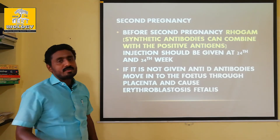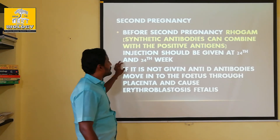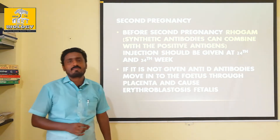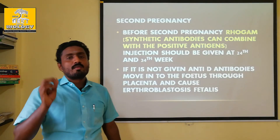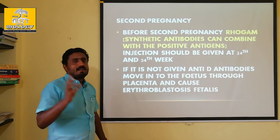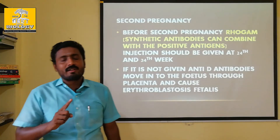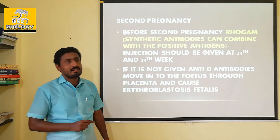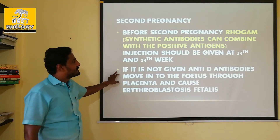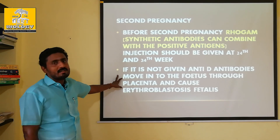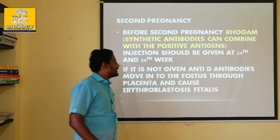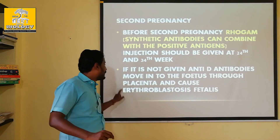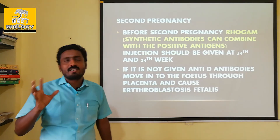The pregnancy period is 280 days. RhoGAM is given at the 24th and 34th week of pregnancy. When administered, because the mother is RH negative and the fetus is RH positive, the injection prevents sensitization. If RhoGAM is not given, antibodies will move through the placenta and cause erythroblastosis fetalis.